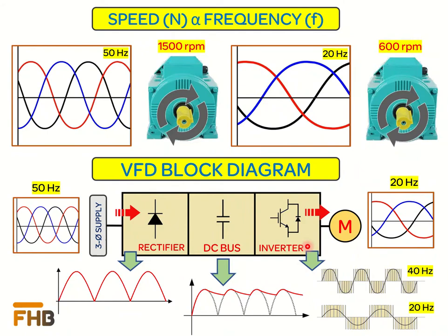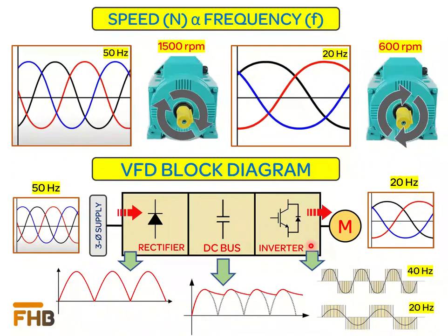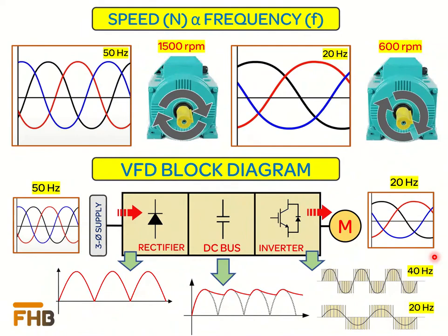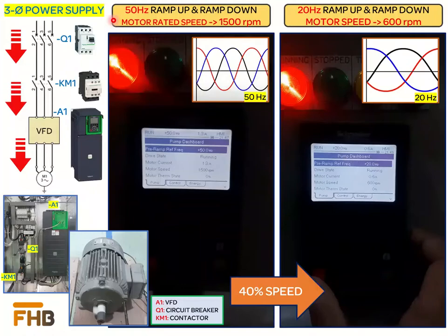In the third stage, called the inverter, switching action using electronic switches such as IGBTs converts the DC output from the DC bus into a rectangular waveform that reflects the shape of a sinusoidal wave. The frequency of the output waveform is controlled by regulating the switching frequency of the IGBT switches.